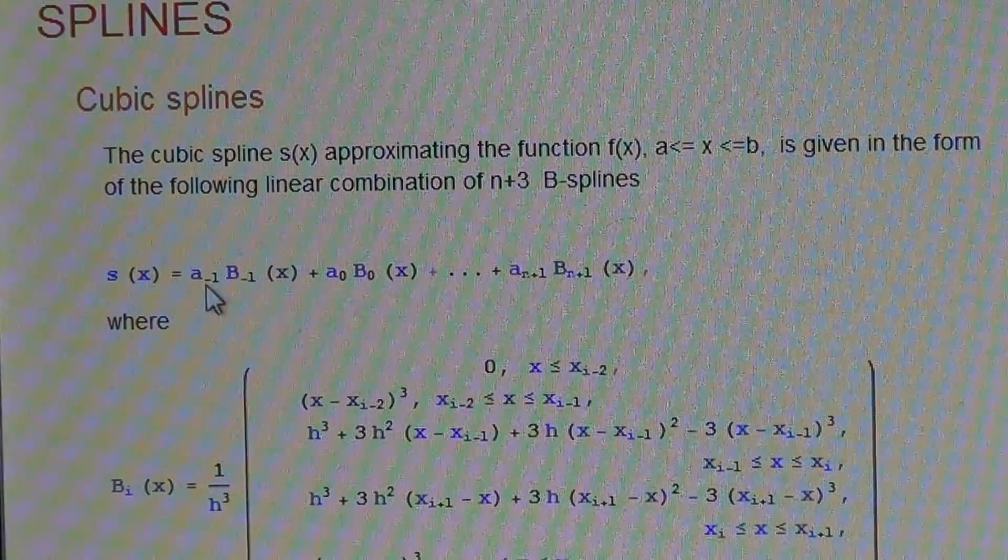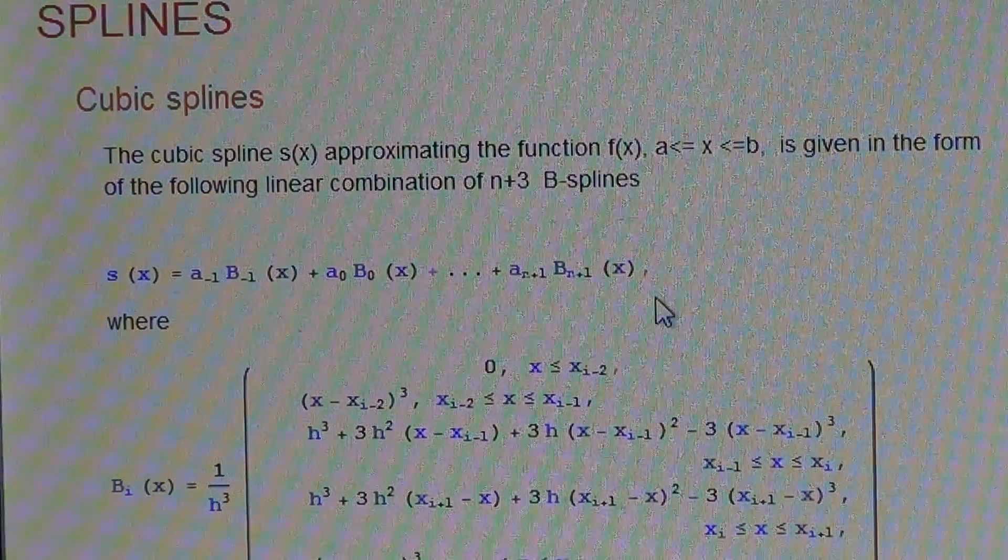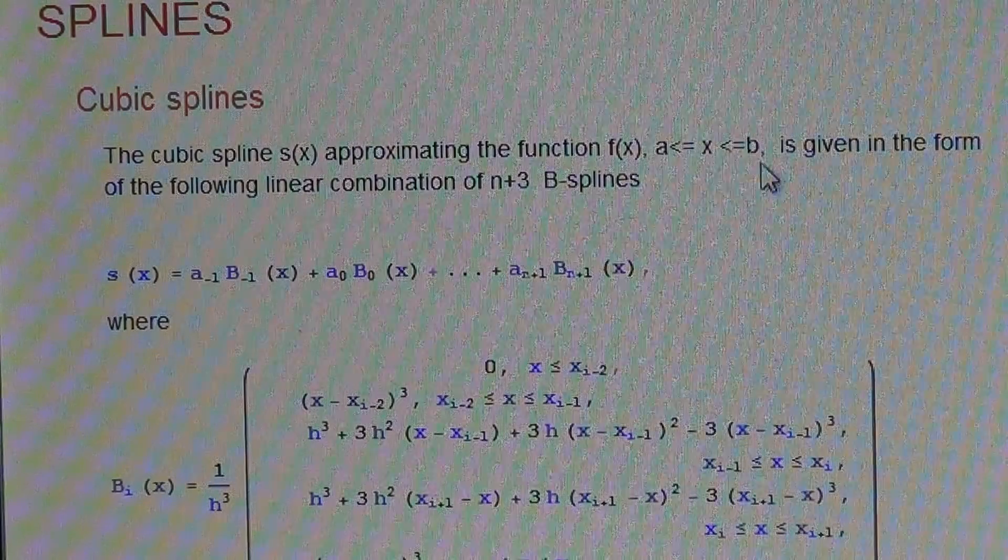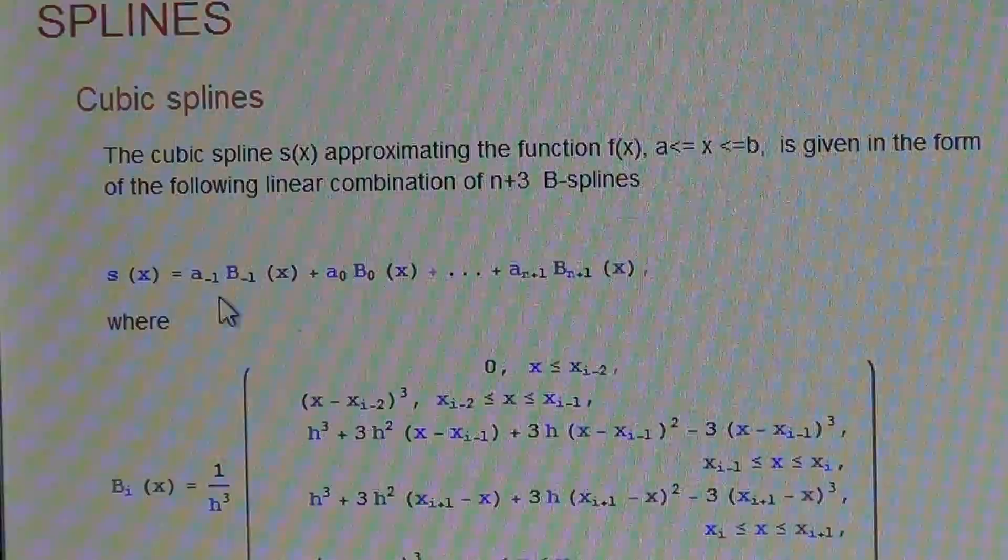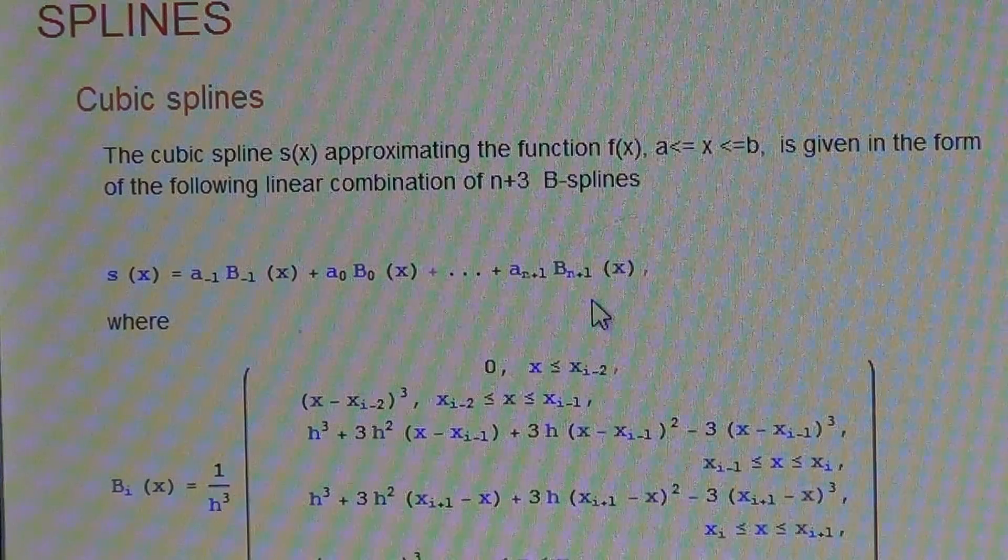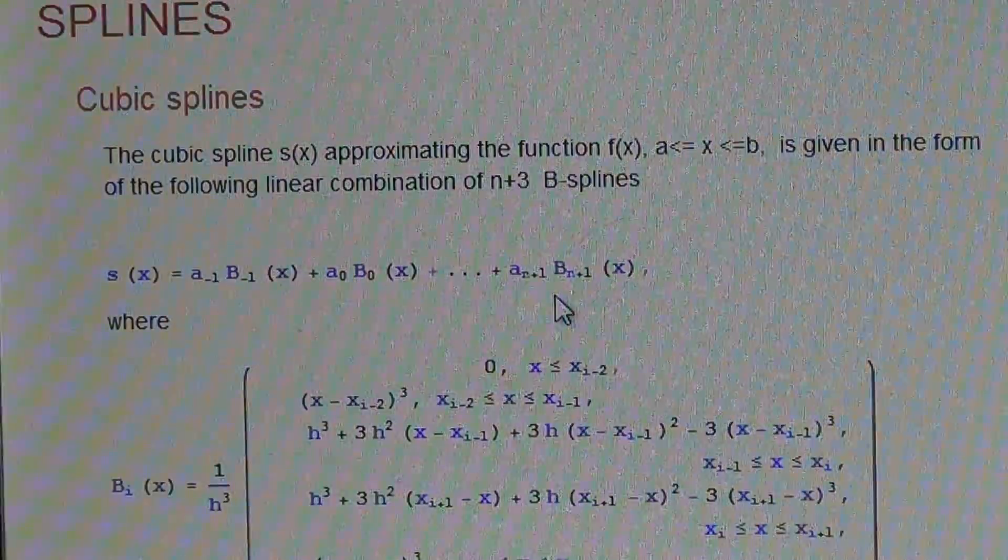The B-splines beyond the sub-range of minus 1 to n+1 are zero on the interval [a,b] and don't contribute to the linear combination. This we shall clarify on the graph later on.